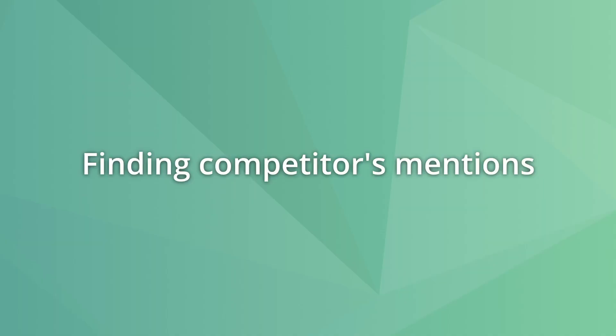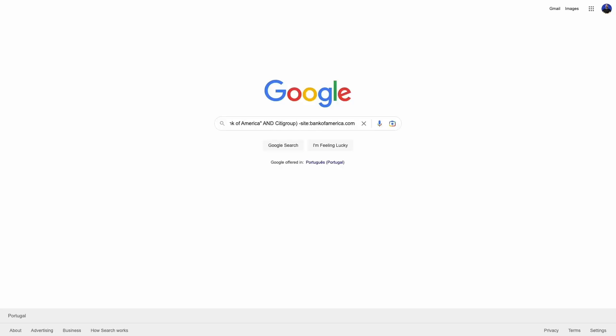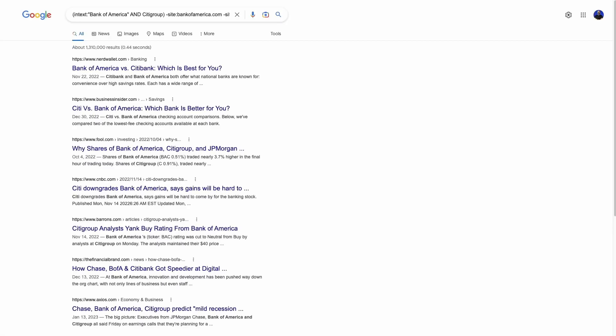With search operators you can also find websites mentioning your competitors that are not mentioning you. Use a query with the parentheses operator, intext for each competitor's name, minus to exclude each competitor's site, and minus to exclude your company name from the text. For example, you could look for websites mentioning Bank of America and Citigroup that were not mentioning Wells Fargo — giving someone at Wells Fargo a list of websites to reach out to and get mentioned alongside their competitors.